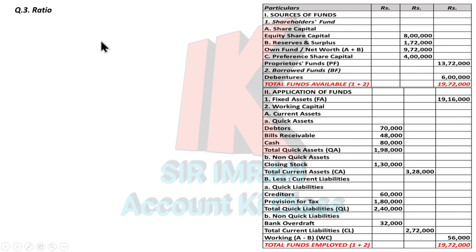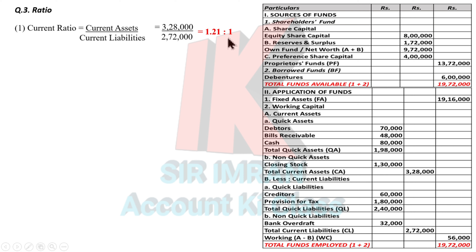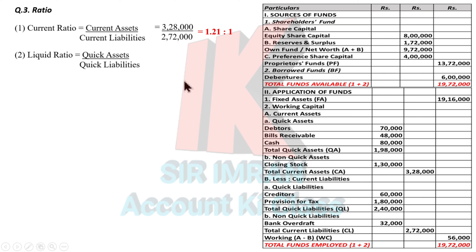Now we proceed to the ratio part — we have to calculate six ratios. First: current ratio = current assets / current liabilities. Current assets total: 3 lakh 28,000; current liabilities total: 2 lakh 72,000. Dividing gives current ratio = 1.21:1. Second ratio: liquid ratio, also called quick ratio or acid test ratio — remember all three names. Quick assets / quick liabilities = 1 lakh 98,000 / 2 lakh 40,000 = 0.825:1.